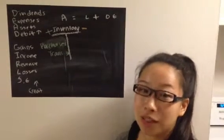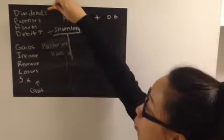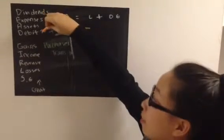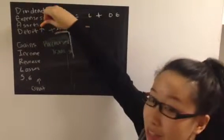So what we learned in class was the acronym DEAD right here, which is dividends, expenses, assets, and debit, or increase with debit.